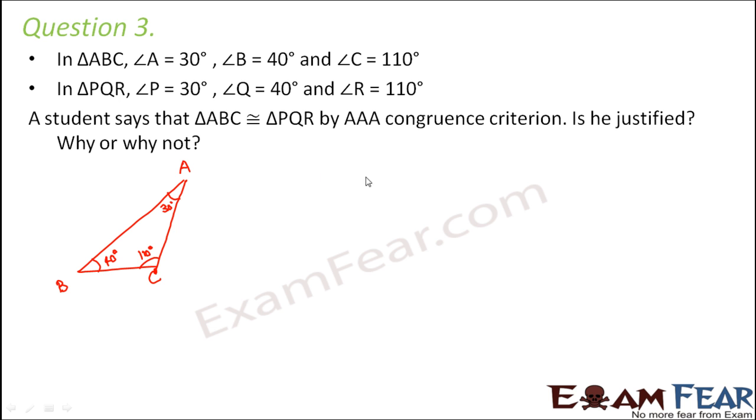In triangle PQR, this is another triangle where the angles are the same basically. So we have angle R equal to 110 degrees, angle Q equal to 40 degrees, and angle P equal to 30 degrees. So we basically have two triangles such that all their corresponding angles are equal. Now a student says that triangle ABC is congruent to triangle PQR by AAA congruence criteria. Is he justified? Why or why not? Now, first of all, do we have something called AAA congruence criteria? Did we learn anything like this? No. So that means the student is telling wrong.